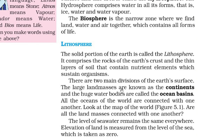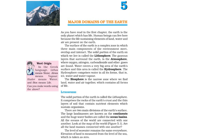There are two main divisions of the earth's surface: the large land masses known as continents, and the huge water bodies called ocean basins. All the oceans of the world are connected with one another, and the level of sea water remains the same everywhere. The elevation, that is the height of the land, is measured from sea level.